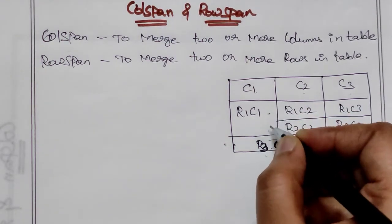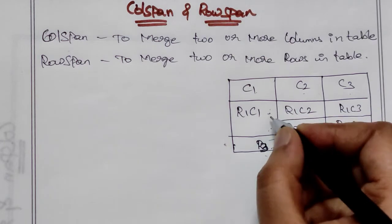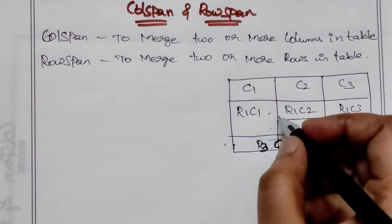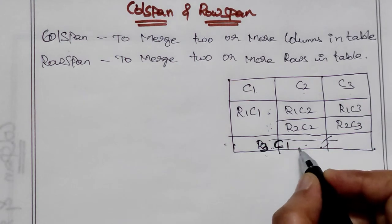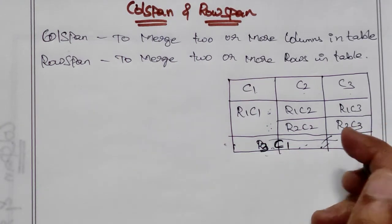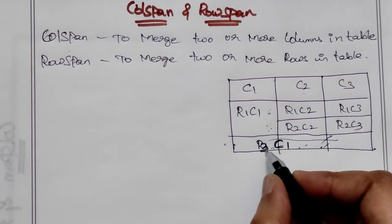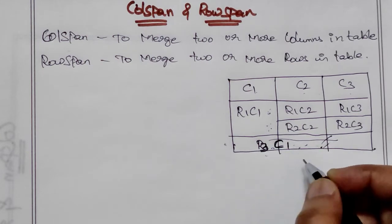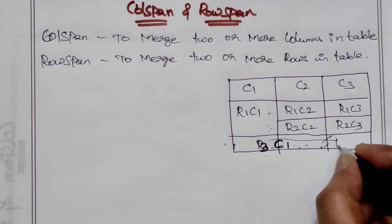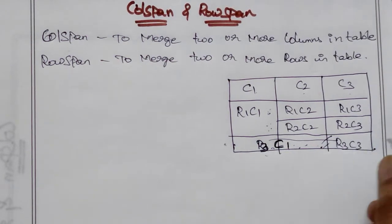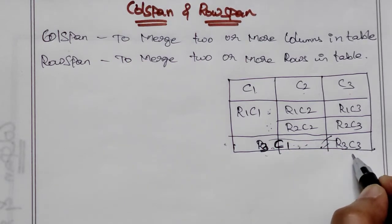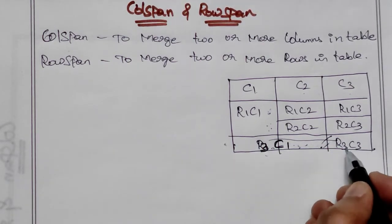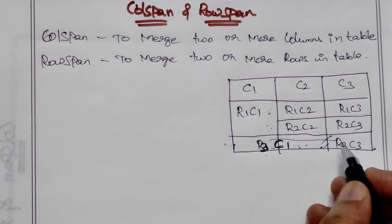Here I'm merging the two rows of column one, so this is row span. In the render column you merge — here it is R3C3 — in the two columns merge, the column update.